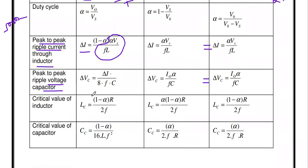The critical value of inductor Lc for the buck converter is: Lc = (1 − α) × R / (2F). For the boost converter: Lc = α × (1 − α) × R / (2F) — the same formula but multiplied by α. For the buck-boost converter: Lc = (1 − α) × R / (2F), which is the same as the buck converter formula.